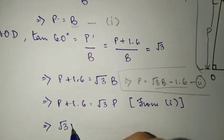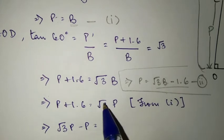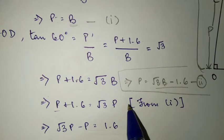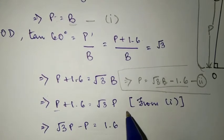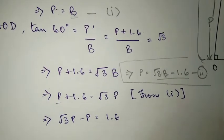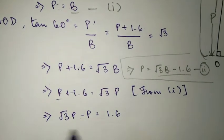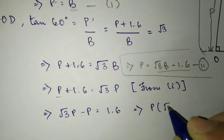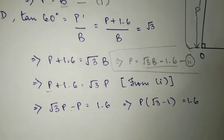The reason why we are trying to make them either both P or both B is because so that we can cancel and it's easier to solve, okay. So we have root 3B minus B, which is equal to 1.6. From the left hand side to right hand side, B is equal to, root 3 minus 1 is equal to 1.6.